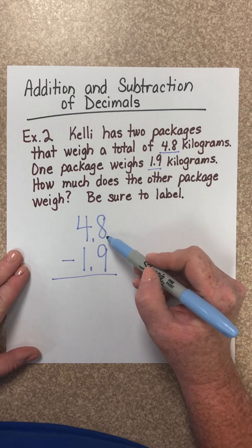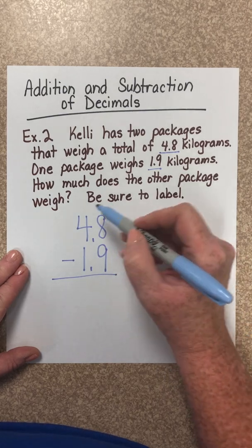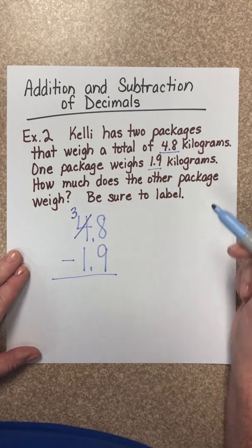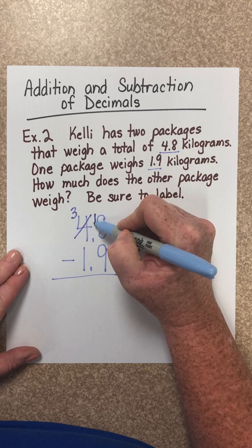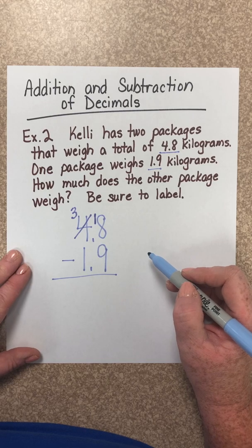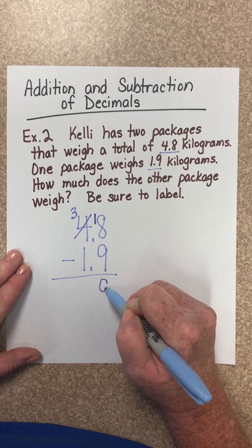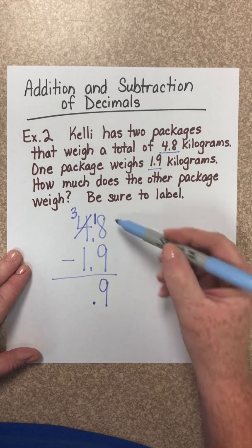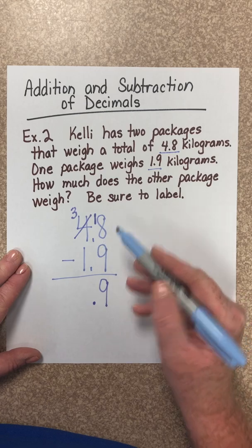So let's begin. 8 minus 9 is, well, we can't do that, so we're going to have to borrow from our neighbor. And it was 4, we're going to take 1 away, make 3. We're carrying a group of 10s. So 8 will become 18 with that group of 10 added to it. 18 minus 9 is 9. Let's bring down that decimal point straight down. Notice I have my columns lined up nicely. 3 minus 1 is 2.